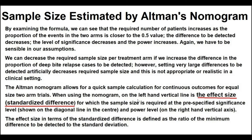Sample size estimated by Altman's nomogram. By examining the formula, we can see that the required number of patients increases as the proportion of the event in the two arms is closer to the 0.5 value. As the differences to be detected decrease, the significance level decreases and the power increases. We have to be sensible in our assumptions. We can decrease the required sample size per treatment arm if we increase the difference in the proportion of relapse cases to be detected. However, setting very large differences to be detected artificially decreases the required sample size, and this is not appropriate or realistic in a clinical setting. Altman's nomogram allows for a quick sample calculation for continuous outcomes for equal-size two-arm trials.